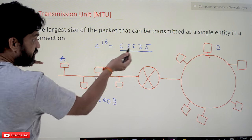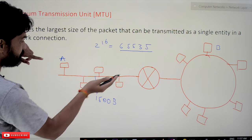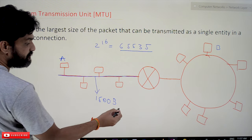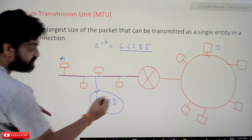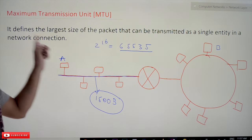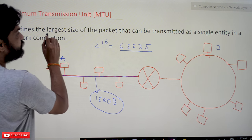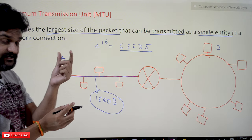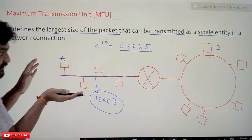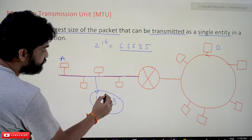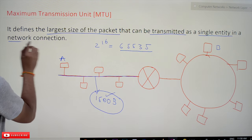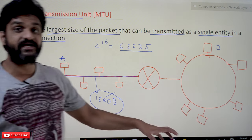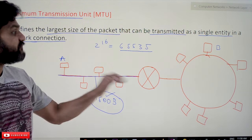The network layer has a capacity of around 65,000 bytes, but this medium — Ethernet — has a capacity of only 1500 bytes. This is what we call the Maximum Transmission Unit: it defines the largest size of packet that can be transmitted as a single entity. Through this network, in a single transmission we can send only 1500 bytes — that is the MTU for this network connection.